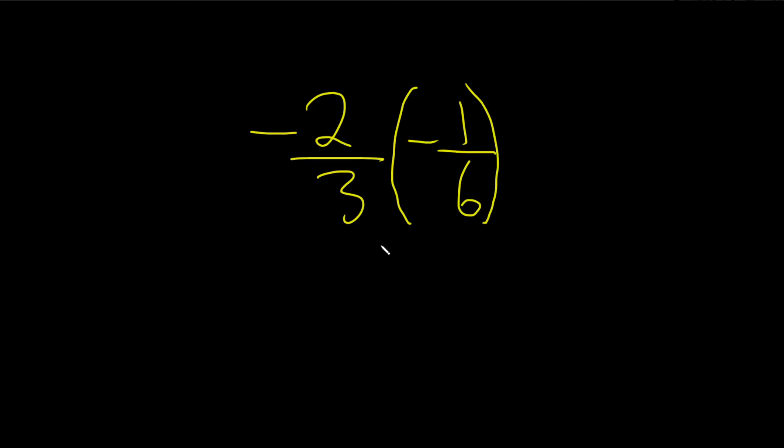In this problem we have two negative fractions and we're multiplying them. So whenever they're next to each other like this and you have parentheses, the operation is actually multiplication. Sometimes you'll see a dot here or sometimes you'll see an x, but if there's no symbol, it means multiplication.